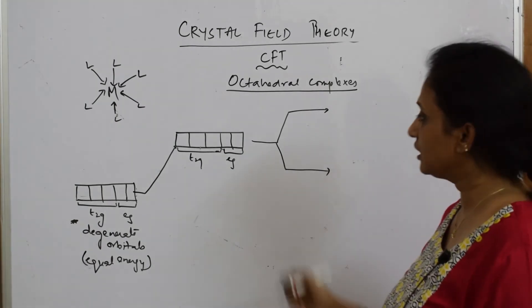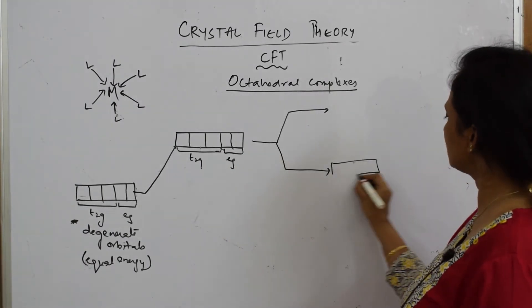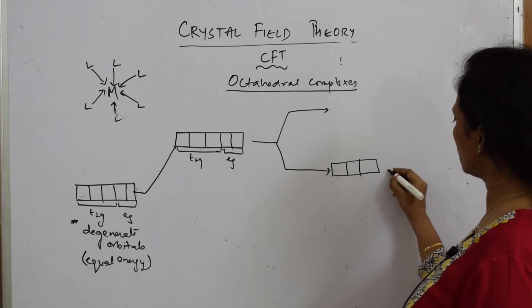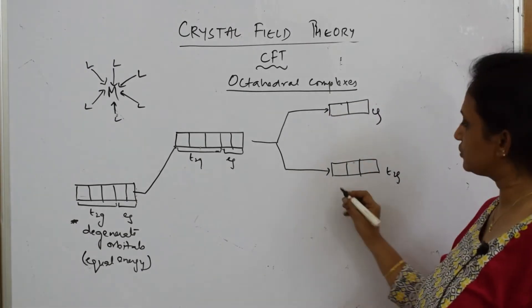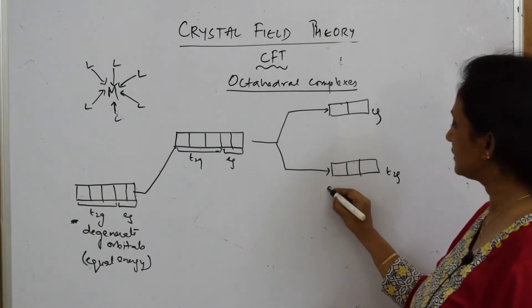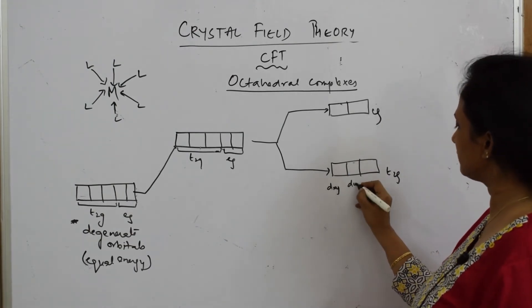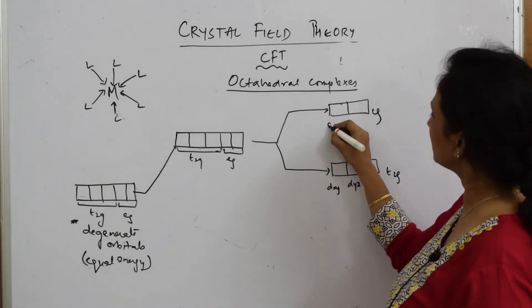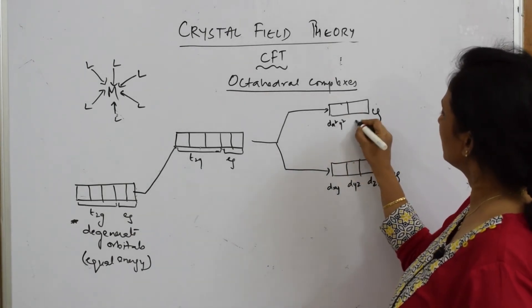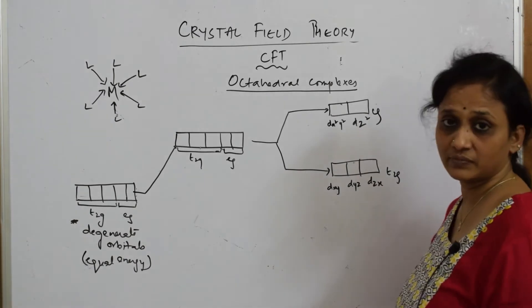Further in octahedral splitting, as I've explained, it's going to split into two states where your t2g set has lower energy and your eg set is of higher energy. Now t2g - please mention this: dxy, dyz, dzx. eg set: dx²-y², dz².